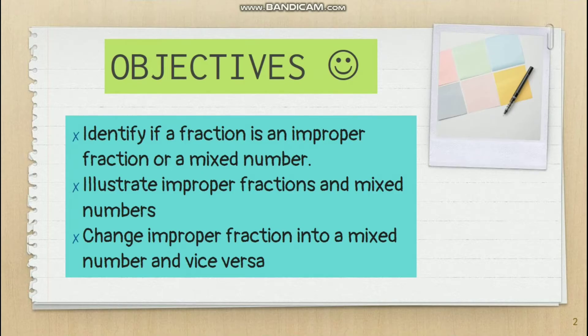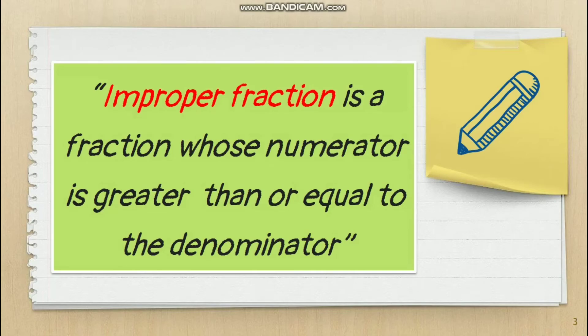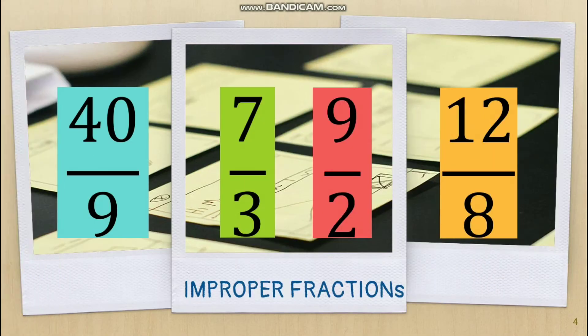Let us start by identifying improper fractions and mixed numbers. An improper fraction is a fraction whose numerator is greater than or equal to the denominator. Here are examples of improper fractions: 4/9, 7/3, 9/2, and 12/8. As you can see, the numerators are bigger than the denominators.